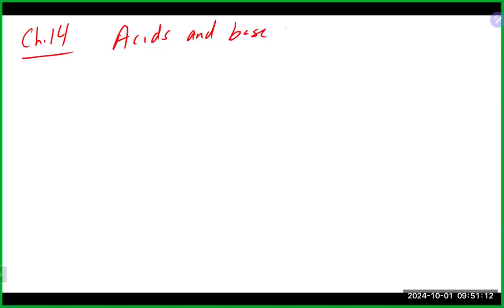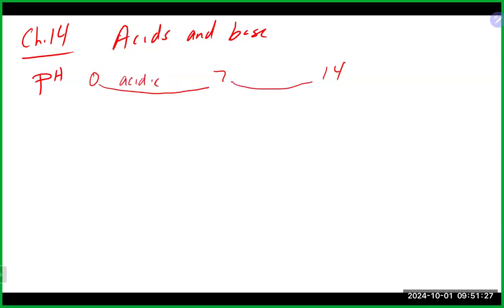We are on chapter 14 here, and last time we got into acids and bases and pH as well. We saw some relationships. The pH scale runs from 0 to 7 to 14, less than 7 being acidic, above 7 being basic, and a pH of 7 is really the definition of neutral.